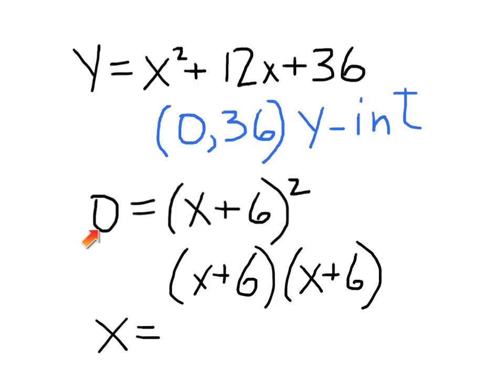When this is zero, that means either this is zero or that's zero. Well, they're the same. So once we figured out a zero for one, we got it for both. And if I already have a plus 6, to make this guy be a zero, this better be a minus 6. So minus 6.